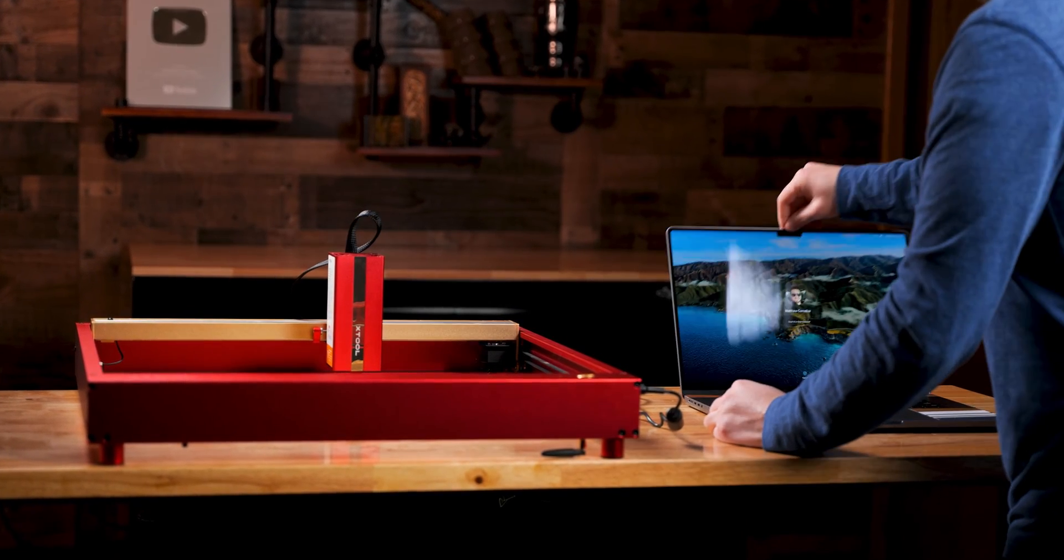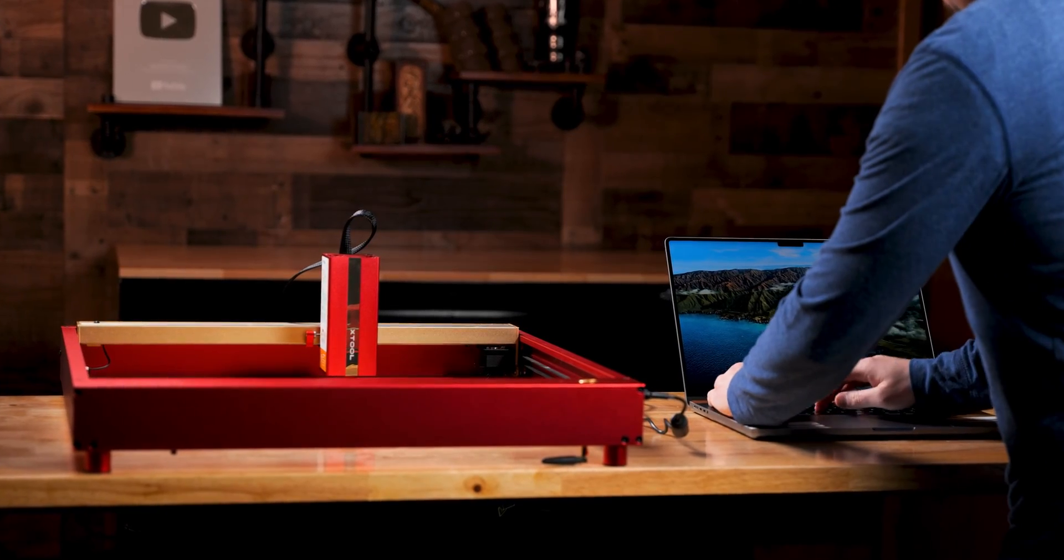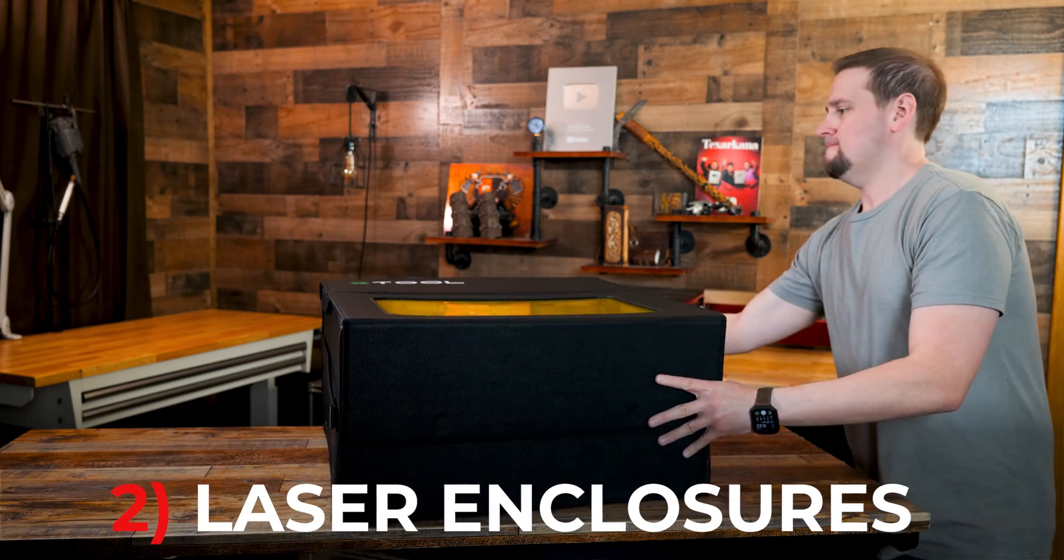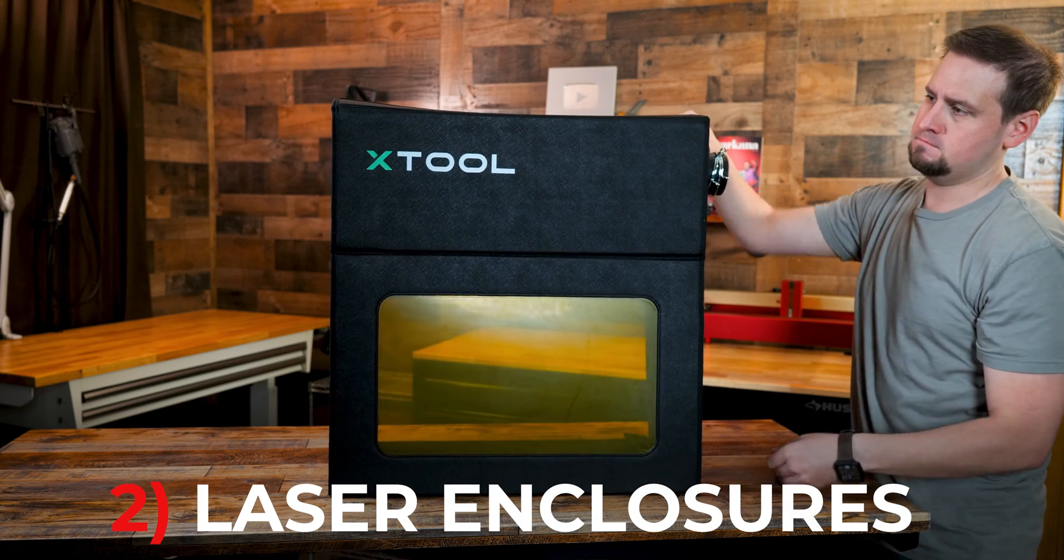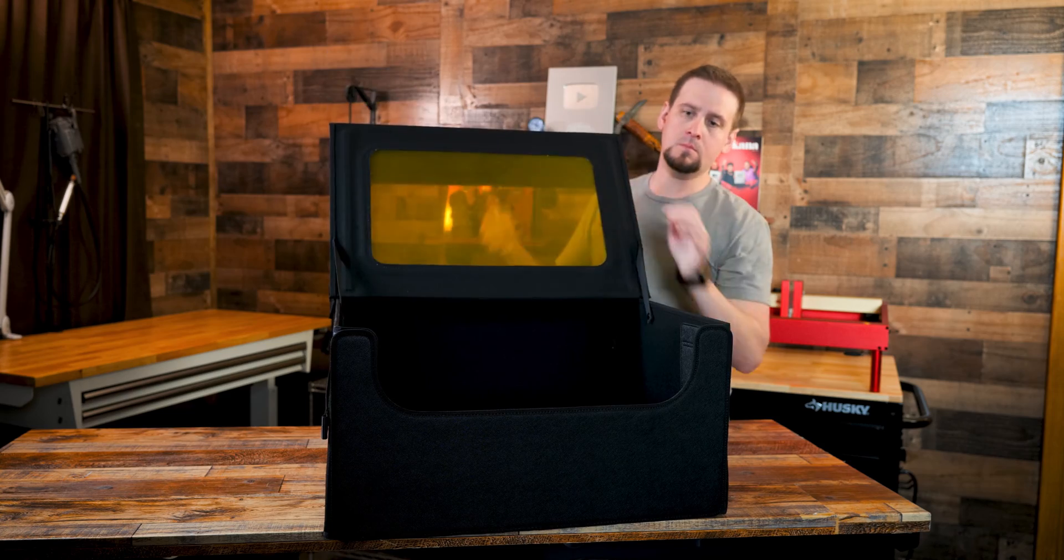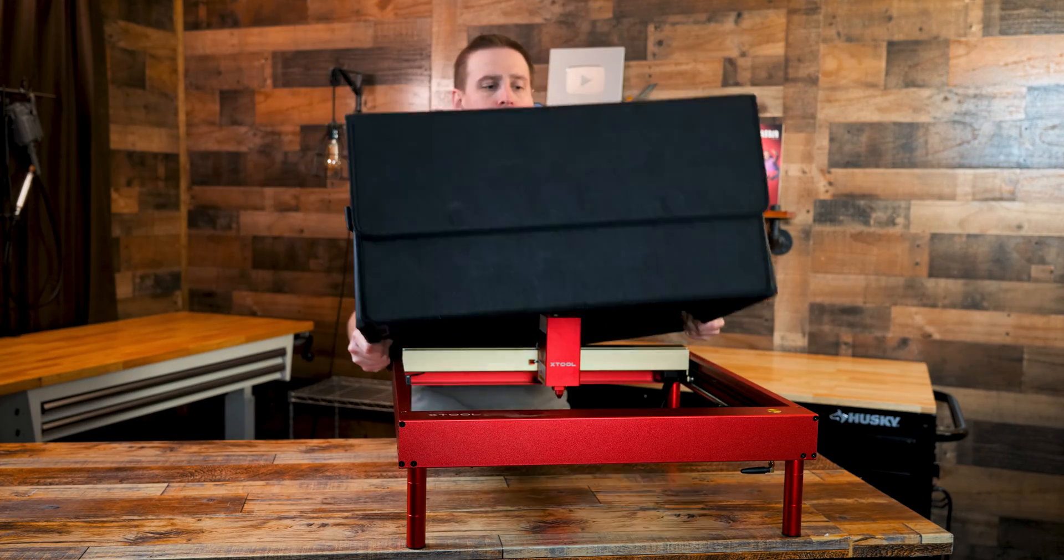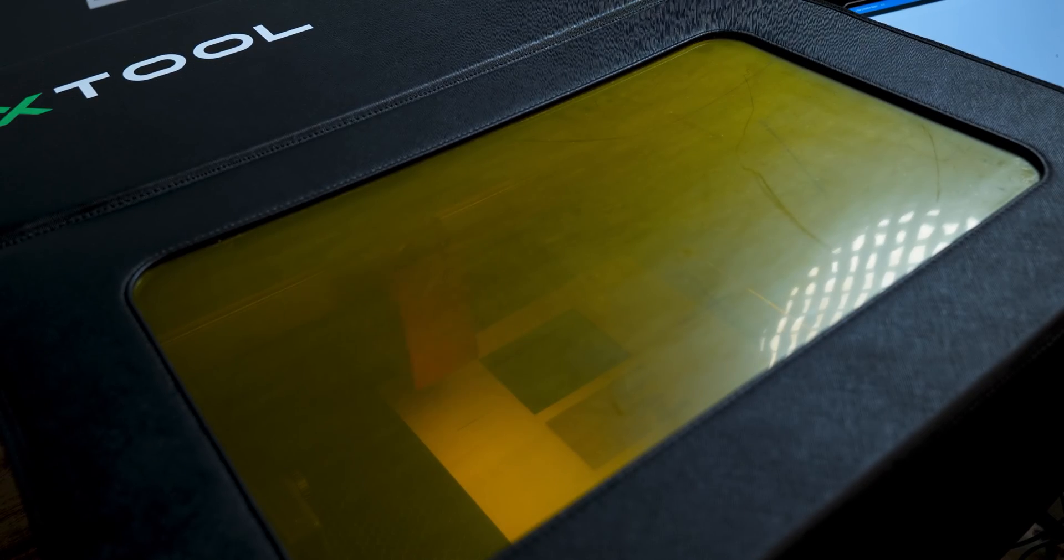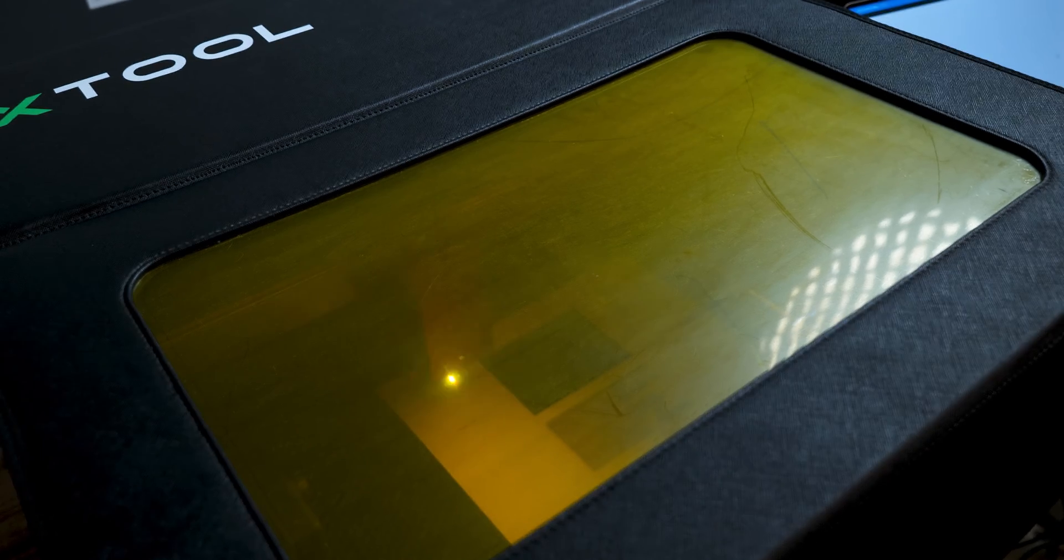Number two: enclosures. If you have an open diode laser like the one behind me, an optional accessory is an enclosure like this one. This will protect your eyes as well as contain all the smoke so it won't be going everywhere. This enclosure from xTool I use is fire retardant, so that's a huge plus. While we are on the topic of enclosures, let's go to number three: proper ventilation.